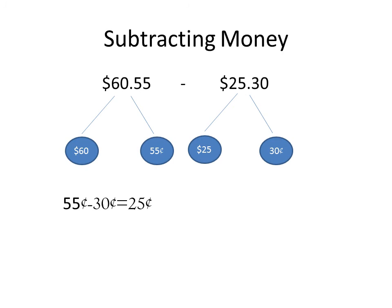Now we subtract the dollars. We have 60 dollars and 25 dollars. From 60 dollars we subtract 25 dollars and get 35 dollars. So we got 35 dollars and 25 cents, which makes 35.25 dollars.